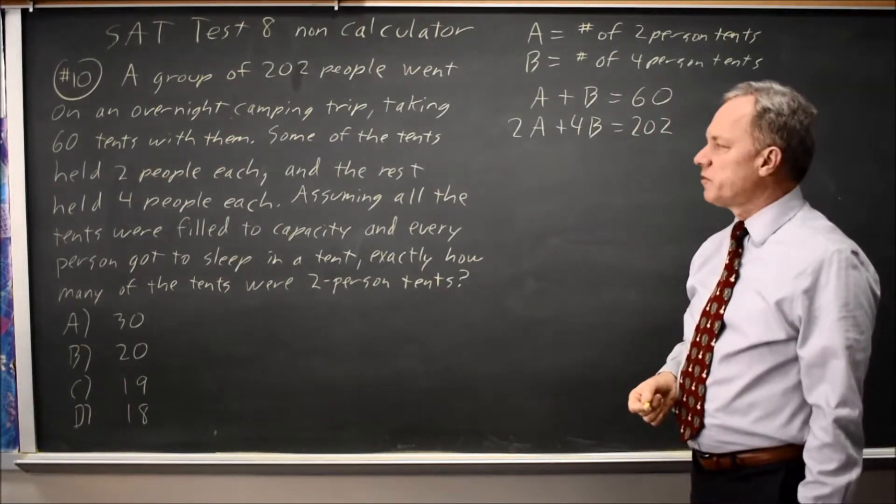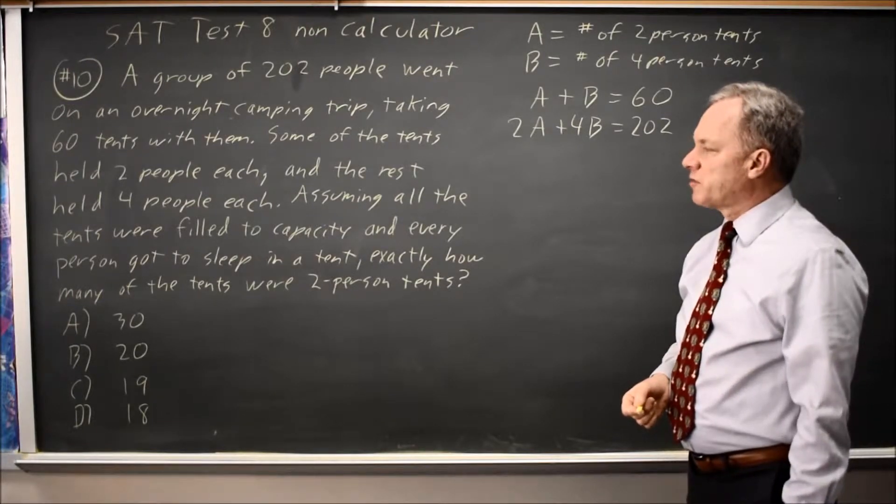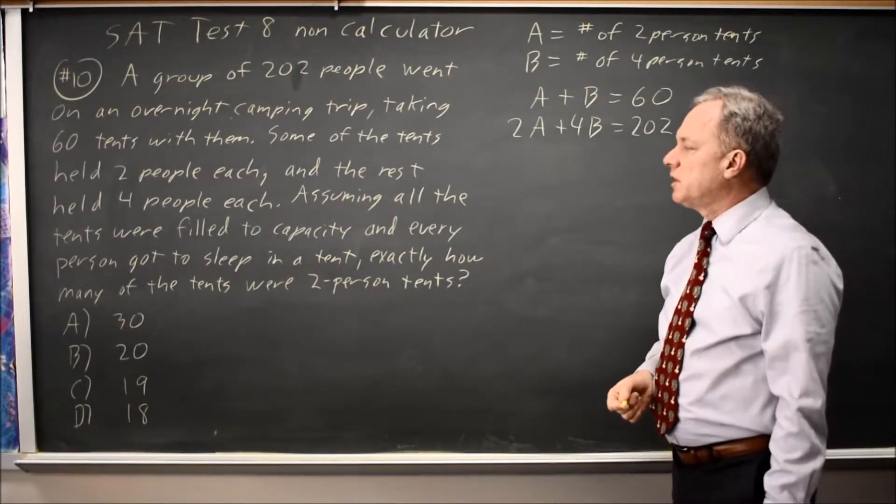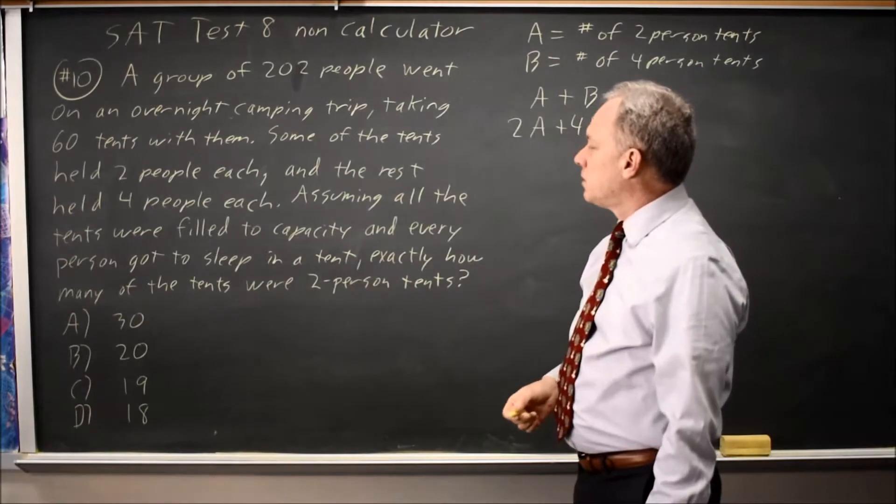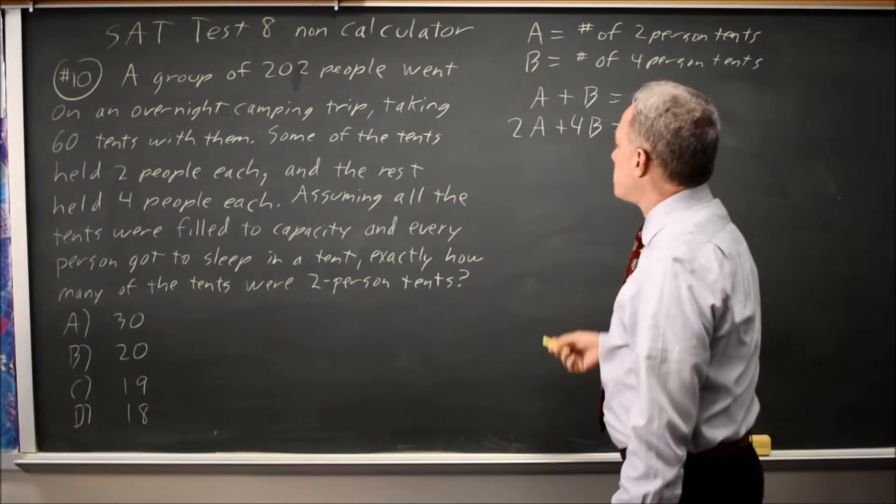We have several ways of solving this, but probably the easiest, particularly if you haven't done systems of equations recently, is they're saying find the number of two-person tents, and it's one of these four numbers. So let's try substituting them in.